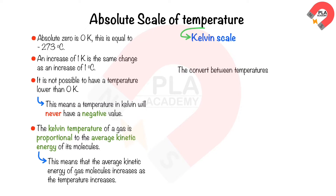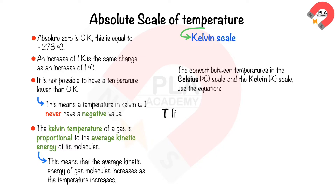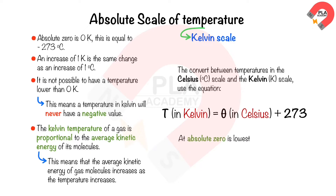To convert between temperatures in the Celsius scale and the Kelvin scale, use the equation: T in Kelvin equals theta in Celsius plus 273. At absolute zero, particles have no kinetic energy — this is the lowest possible temperature.